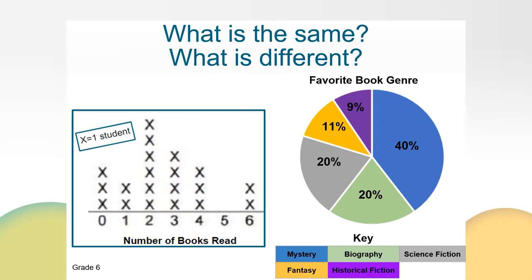Although these graphs have similarities, their data does not match — the graphs display different data. Our learning goal for today is to represent the same data on a line plot and a circle graph. Let's think about how the data from this line plot could be shown or represented on a circle graph. Now we'll take the data represented in Ms. Hogan's line plot and create a circle graph.